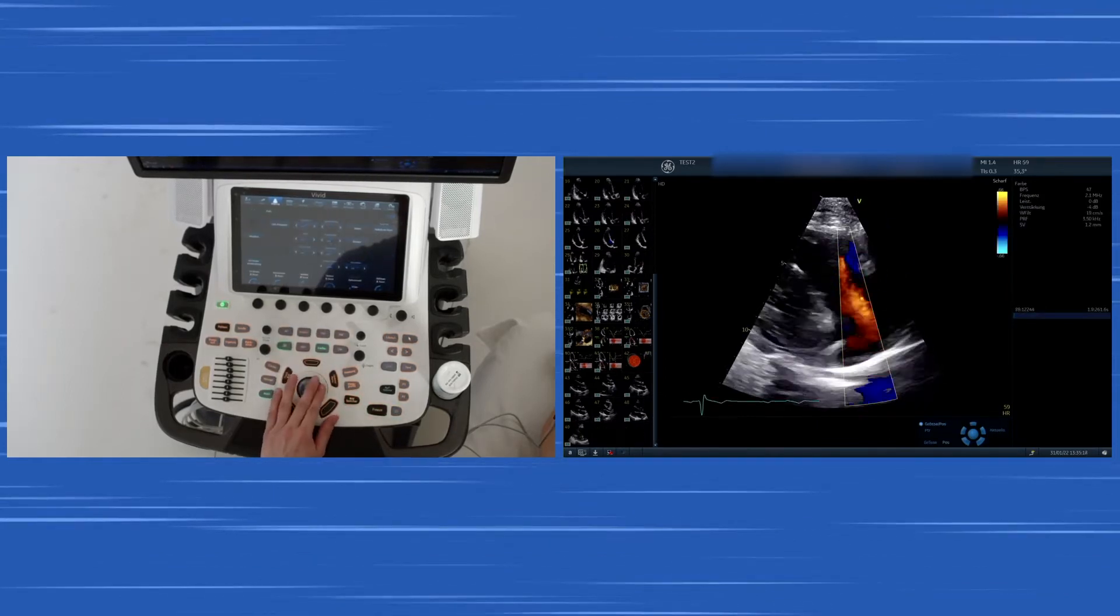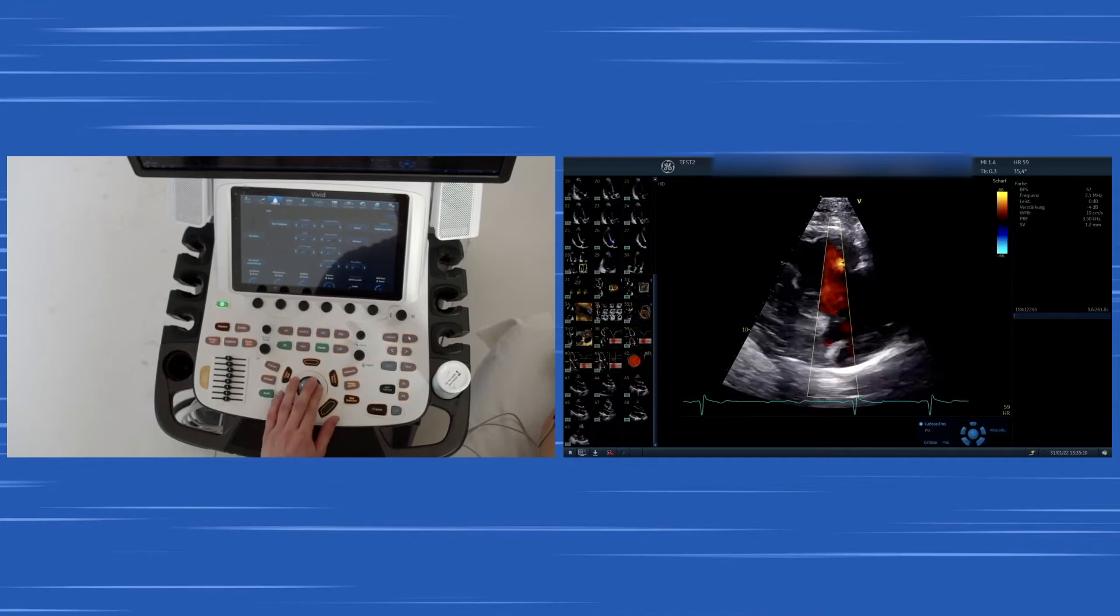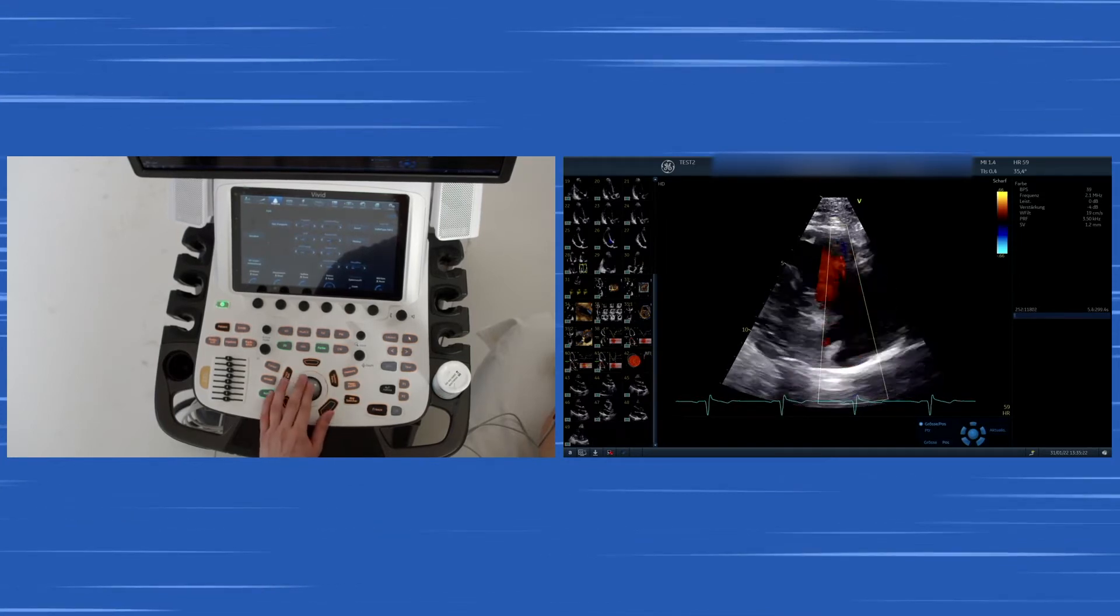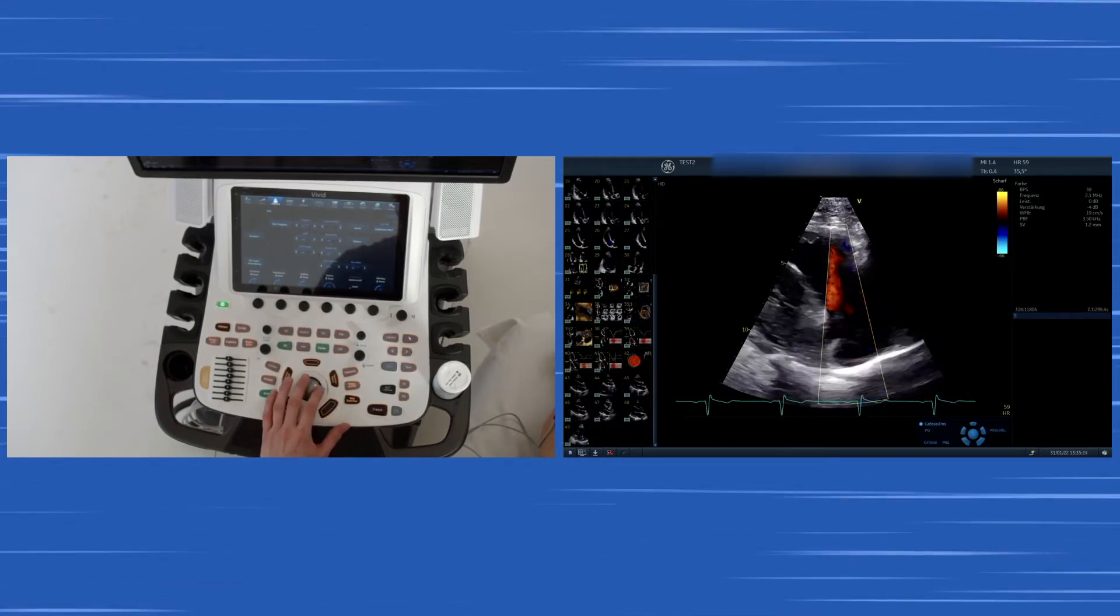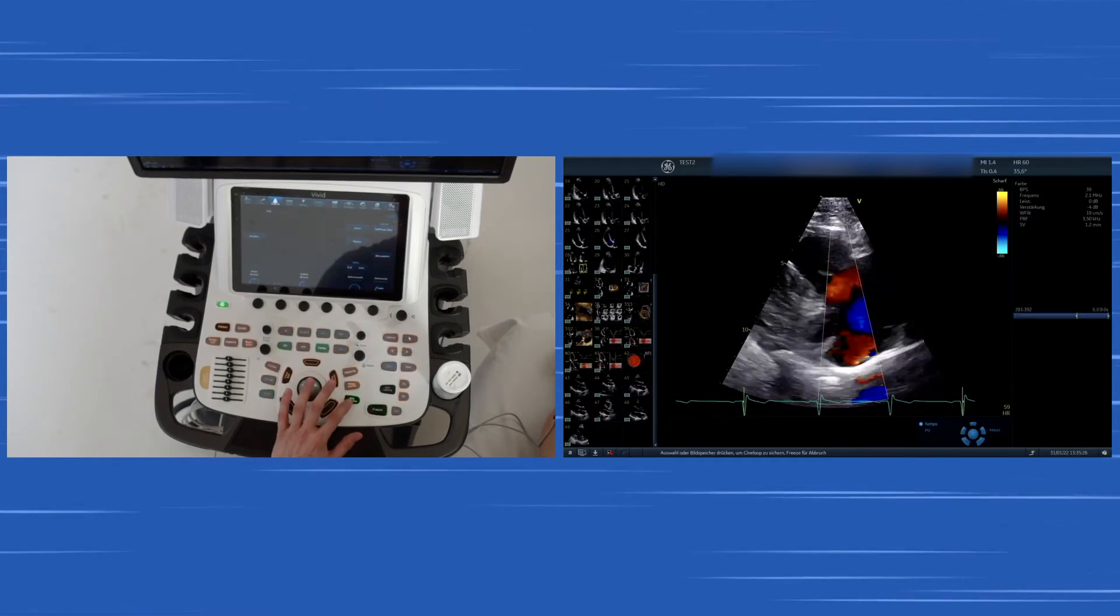You also can adapt the color Doppler and the region of interest there. The broader it is, the less frame rate you will have but the more information you will get, but keep it as slim as possible.